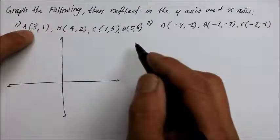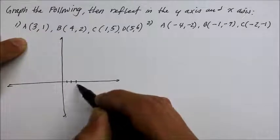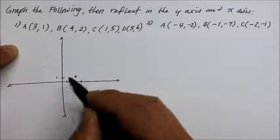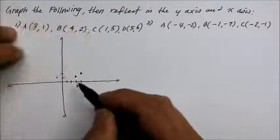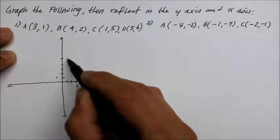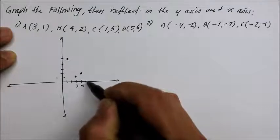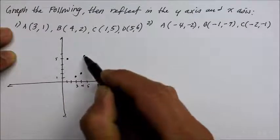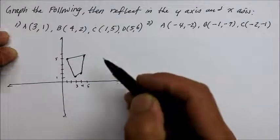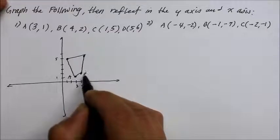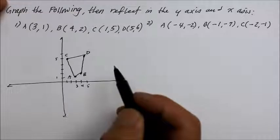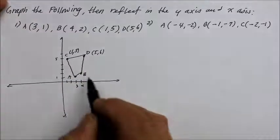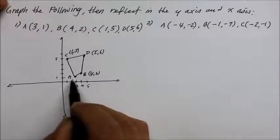The first point, A, is at (3, 1). B is at (4, 2). C is at (1, 5). And D is at (5, 6). So we have A, B, C, and D plotted. D is (5, 6), C is (1, 5), B is (4, 2), and A is (3, 1).